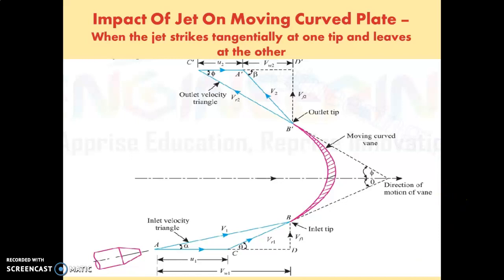Good morning students. In the last lecture we have seen the impact of a jet on a moving curved plate when the jet strikes the plate at the center. Today we are going to see the example of the impact of a jet on a moving curved plate when the jet strikes tangentially at one tip and exits at the other.